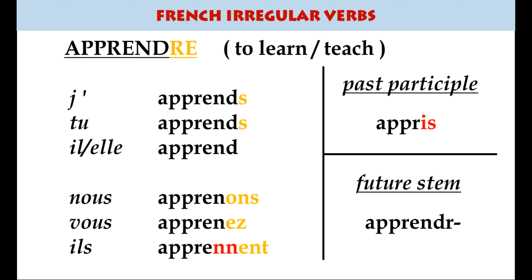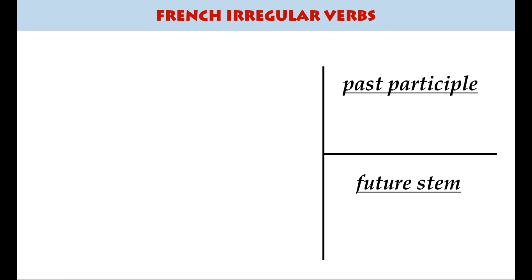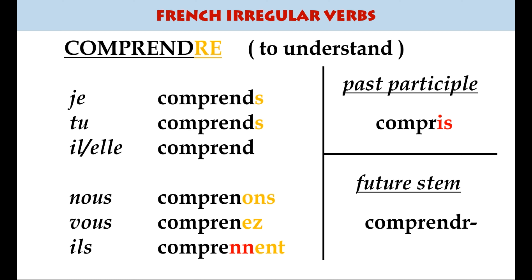Once you've got prendre you can also learn apprendre, meaning to learn and to teach — French uses the same verb for both — and it follows exactly the same pattern. Then there's comprendre, to understand: je comprends, tu comprends, il comprend, nous comprenons, vous comprenez, ils comprennent. The past participle is compris — for example, vous avez compris, have you understood?